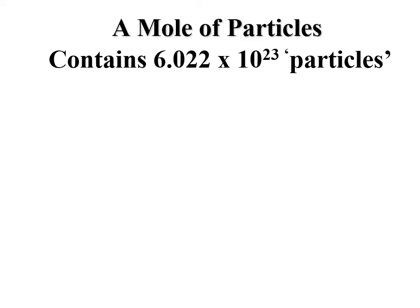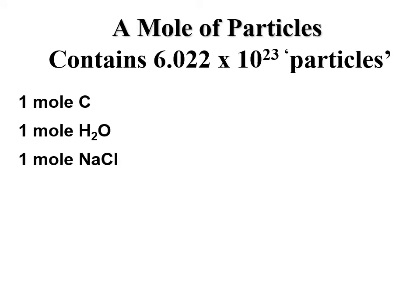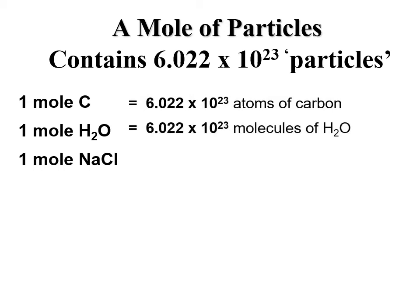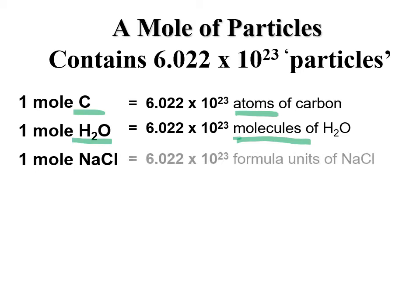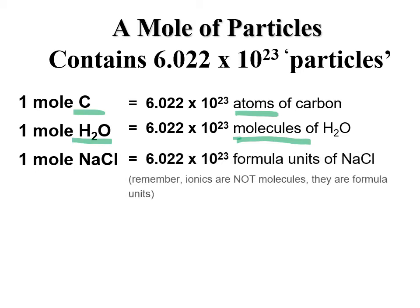A mole of particles contains 6.022 times 10 to the 23 particles. If you had a mole of carbon, you'd have 6.022 times 10 to the 23 atoms of carbon. A mole of water would have 6.022 times 10 to the 23 molecules. Notice that different substances come in different types of particles — carbon gives atoms, water gives molecules, and sodium chloride, being an ionic compound, gives 6.022 times 10 to the 23 formula units.